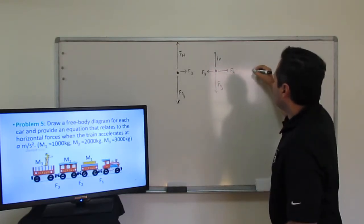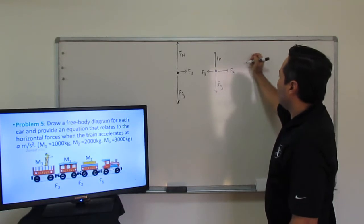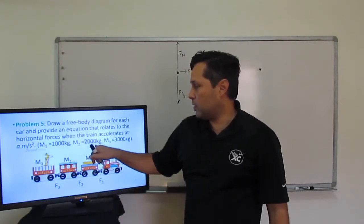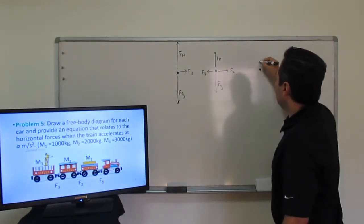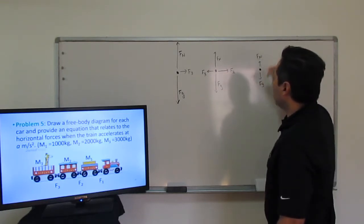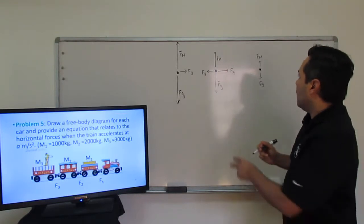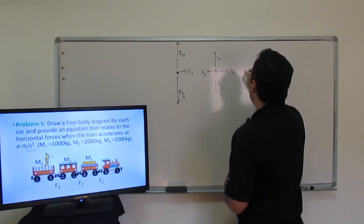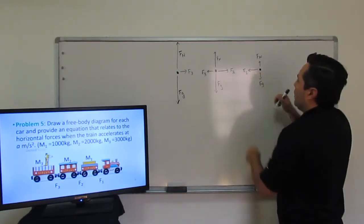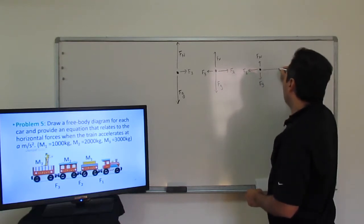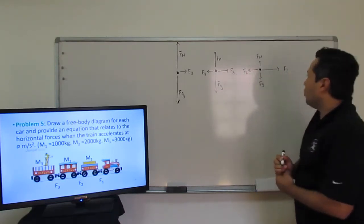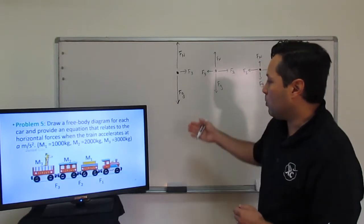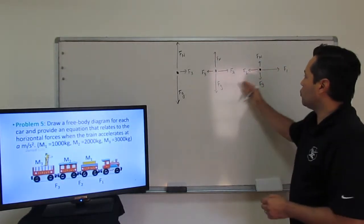Cart number one is the lightest at 1,000 kg, much lighter than the other two. So I draw smaller arrows for force of gravity and force normal. The force from the second cart is also pulling on it, so I put F2 with the same magnitude. Since it's accelerating, I put a longer arrow for force one, which is the engine pulling on the cars behind it. That's the free-body diagram for carts three, two, and one.